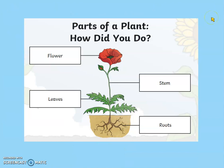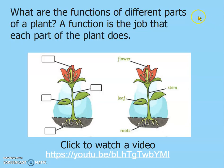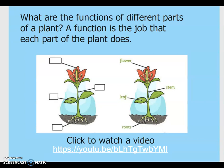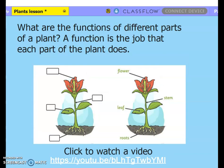How did you do? Did we get that the top red part was the flower? The long stalk-like stem? Green leaves, and the root that's holding the plant in the ground. Well done if you got those correct. Now every single part of the plant does a different job, and this is called its function. We're going to watch a three-minute video clip which tells us all about the different functions of plants. While you're watching, make note of the function of each different part of the plant — this will really help us in our task later.